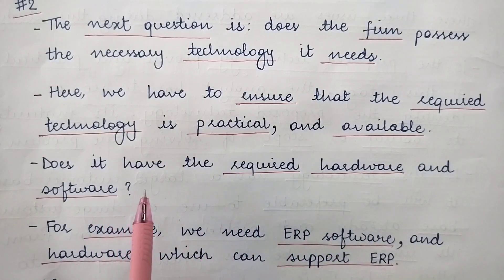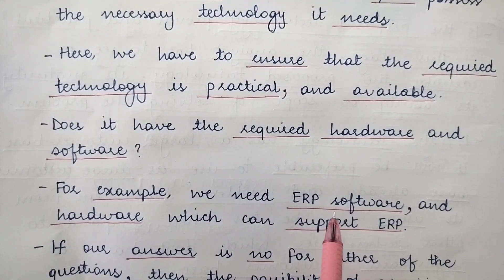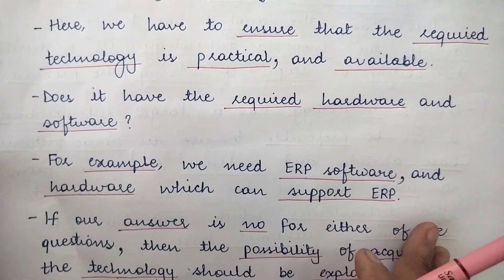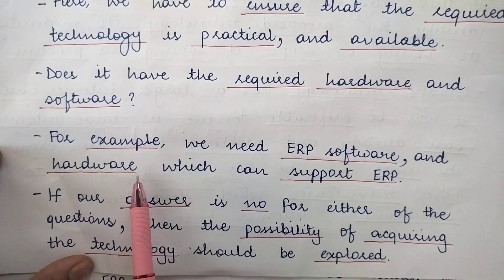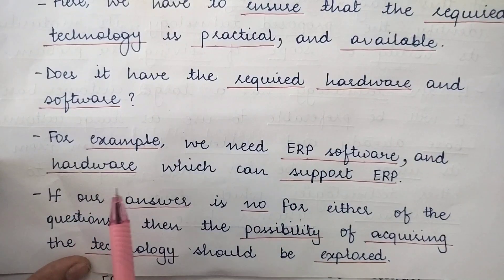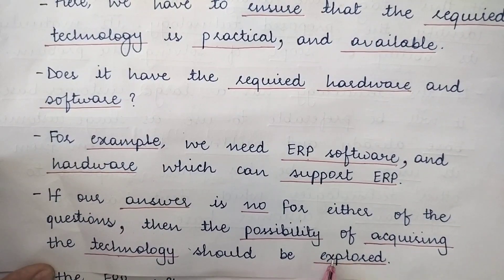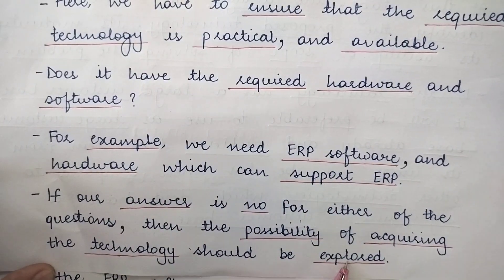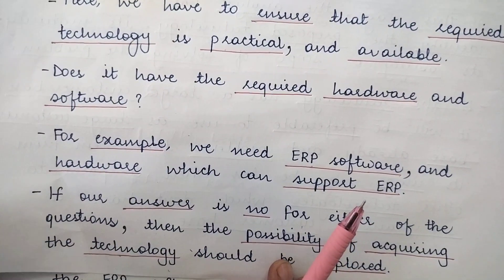Does the client have the required hardware and software? For example, if we are developing ERP software for a client, we need hardware that can support that ERP software. If our answer is no for either of those questions — we don't have the ERP software or we don't have the supporting hardware — then the possibility of acquiring that technology should be explored, because it would be required for the development of the information system.